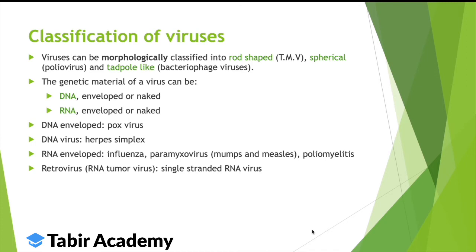An example of an enveloped DNA virus would be a pox virus. Herpes simplex is also a DNA virus. RNA viruses that are enveloped include influenza. Poliomyelitis, mumps and measles are paramyxoviruses. A retrovirus is a particular type of virus that reverse transcribes its RNA — it makes DNA from RNA — which is why it's called a retrovirus.